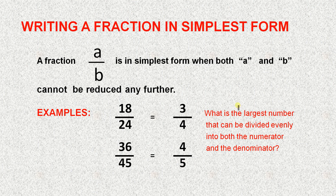Writing a fraction in simplest form. A fraction A over B is in simplest form when both A and B cannot be reduced any further. Now here, we have started with eighteen over twenty-four, and we have to write that in simplest form.